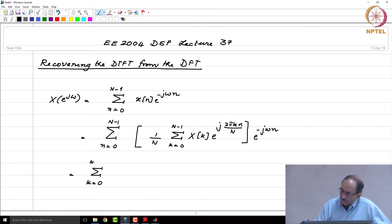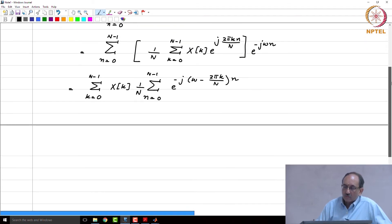So, you have k going from 0 to N minus 1, X of k, and here you collect all the other terms: n going from 0 to N minus 1, over N, e to the j times omega minus 2 pi k by N, the whole thing by little n.